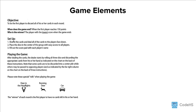In our Deer in the Headlights tabletop game, the game's objective or goal is clearly stated in the instructions: to be the first player to discard all of his or her cards in each round. It also explains when the game ends, how to determine a winner, and the overall rules of the game. Additional rules might be defined by the game mechanics as well.